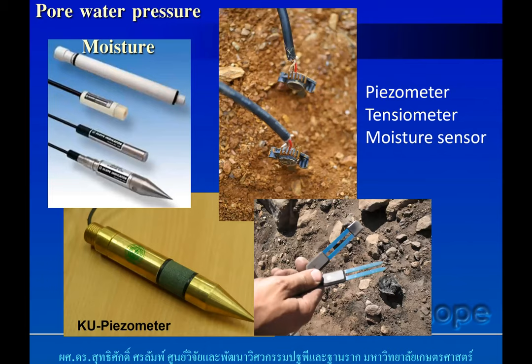Another example is a moisture meter, tensiometer, or moisture sensor. This is actually not purely direct measurement. If we have a piezometer or tensiometer measuring moisture or pore water pressure, we still need to calculate the possibility of the landslide. But anyway, this is still in the group of direct warning.